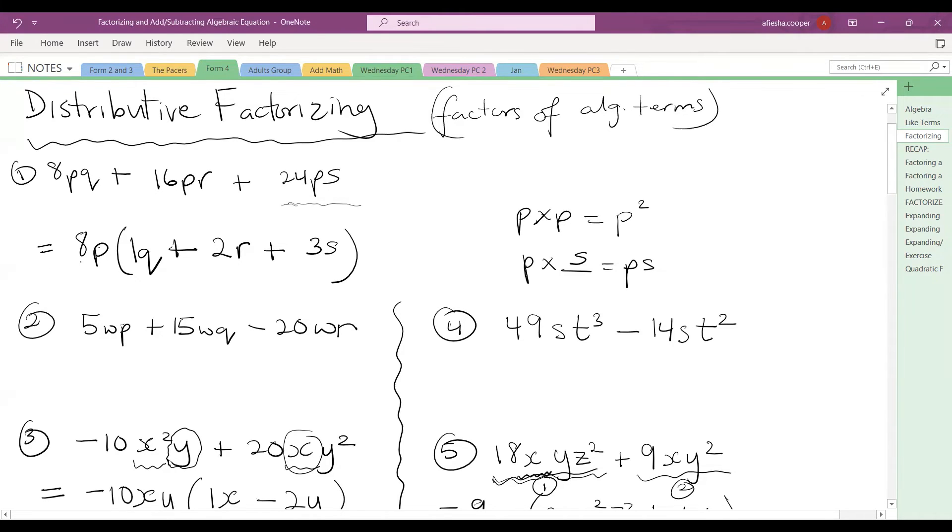So we have a question here. That is 8pq plus 16pr plus 24ps. Now we are seeing that they are unlike terms. We can't add them because one variable is pq, another is pr, another is ps. But for the numbers, we define a factor. So again, a factor is a number that could go into other numbers without a remainder. So between 8, 16, and 24, what we want to do is find the highest common factor.